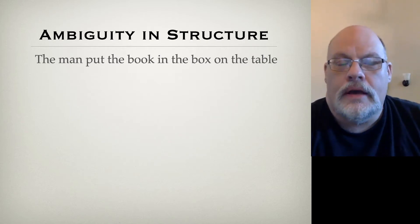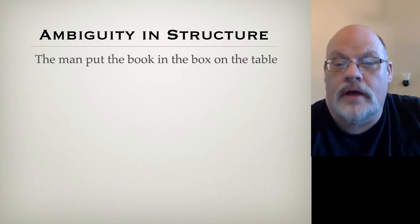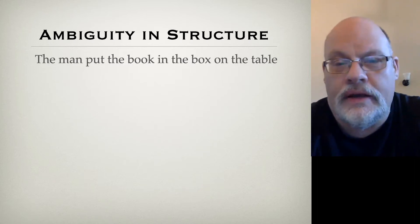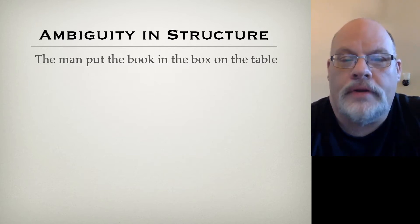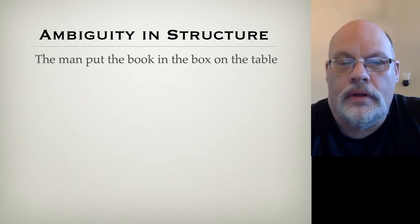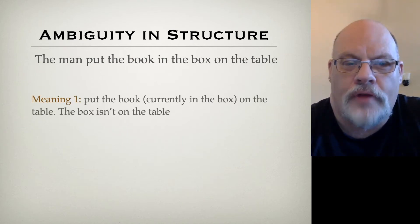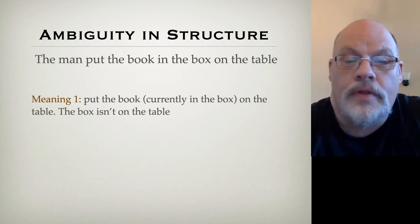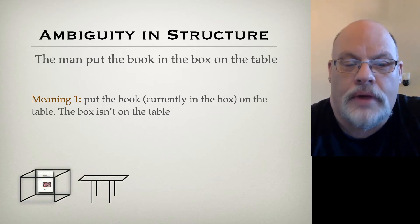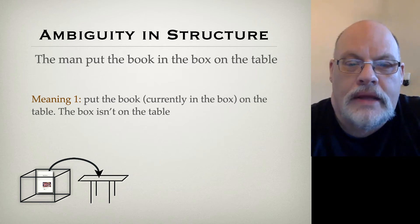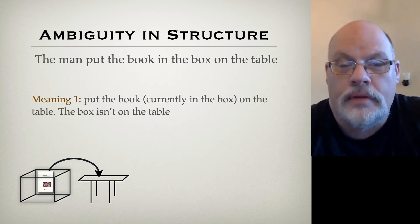Take this example: 'The man put the book in the box on the table.' This has at least two meanings. In the first meaning, there's a book that's in the box and you put it on the table. In that meaning, 'in the box' modifies 'book' and 'on the table' describes where you put it.